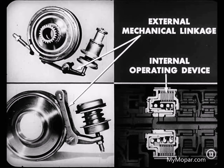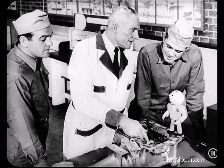All three units are hydraulically operated. The main difference is that the two servos have external mechanical linkage, while the direct clutch is an internal operating device. You ought to remember that the whole purpose of the hydraulic control system is to operate these three units smoothly and at the proper time. We'll talk more about these three units later.